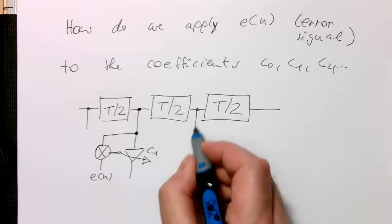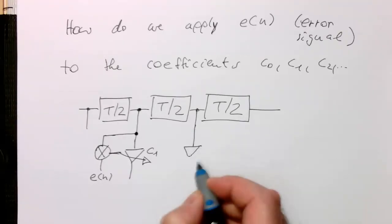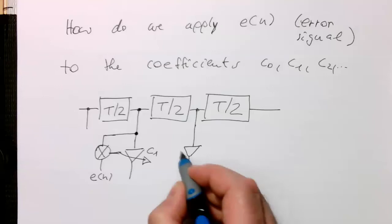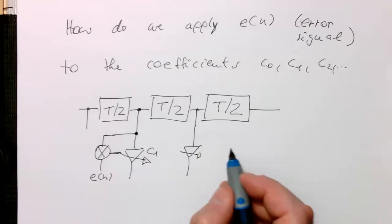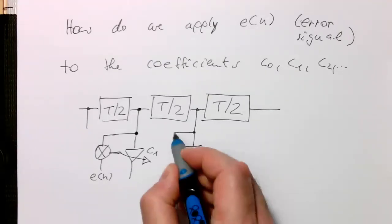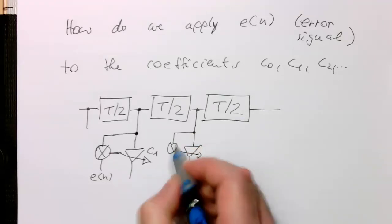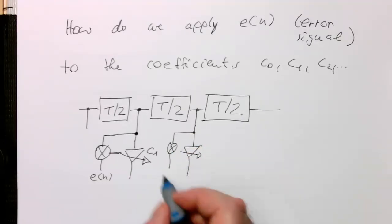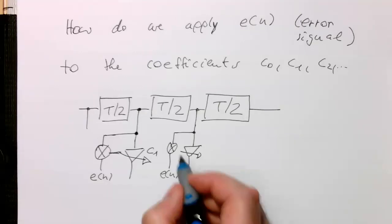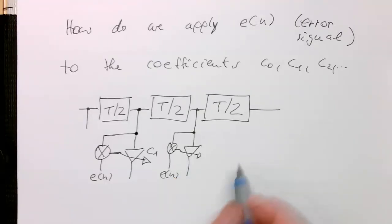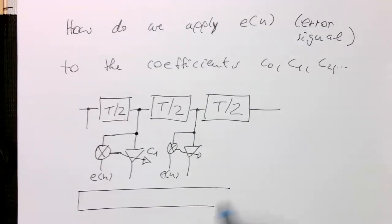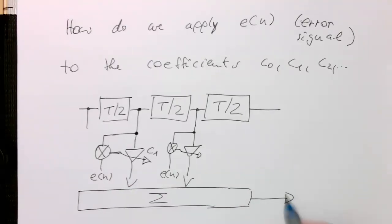And so the same would be also done here in the same way that we also take here the signal. We multiply that with E of N. And then we're tuning this weight here. And they're all going into our summation unit. So that's here our sum. And then this is here our output.